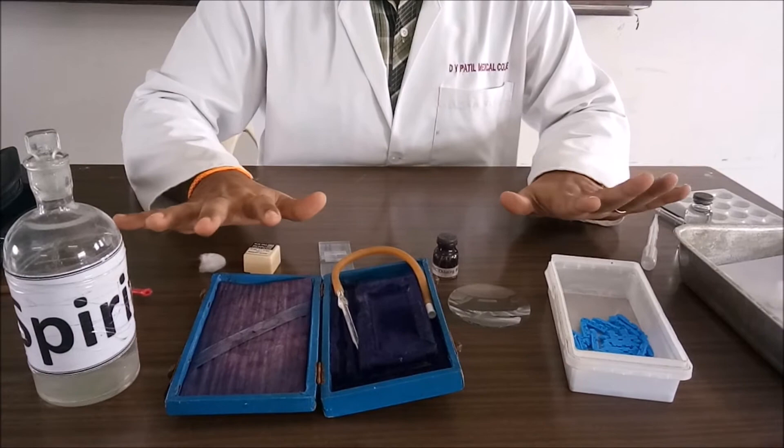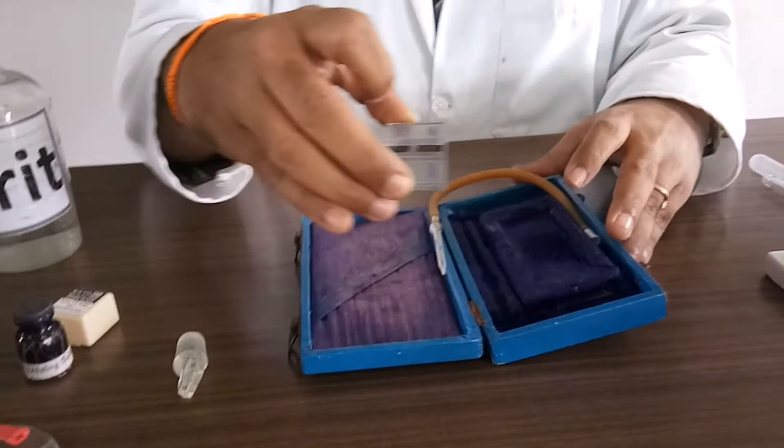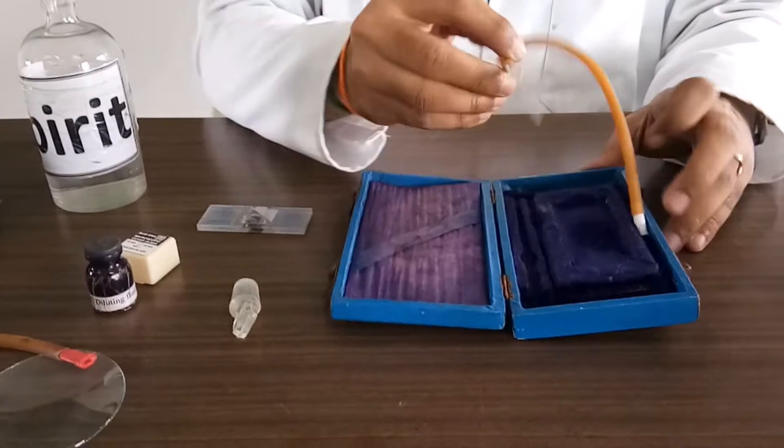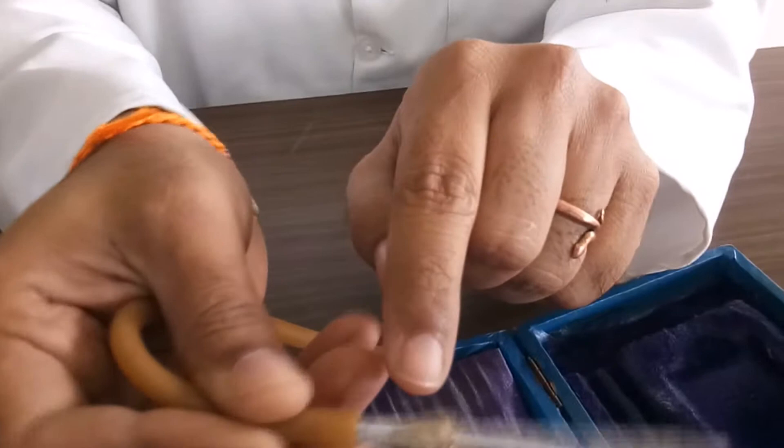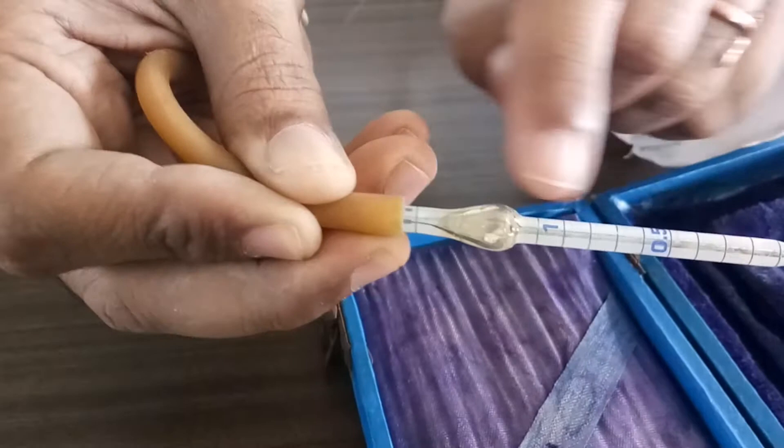Now I have cleaned, I have kept the cover slip in the Neubauer chamber. Even I have focused under that particular microscope that is low power. Now we are going to check our WBC pipette is dried or not. You can see the bead. See how freely the bead is moving, which denoting inside is fully dried.